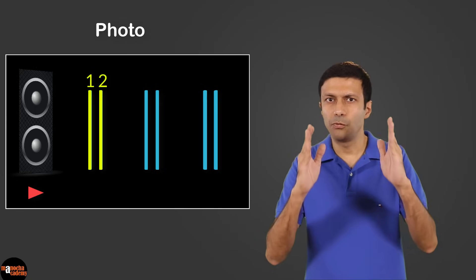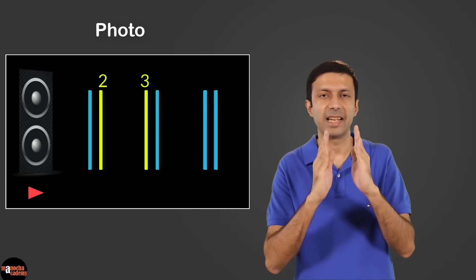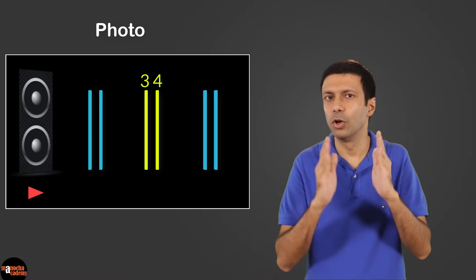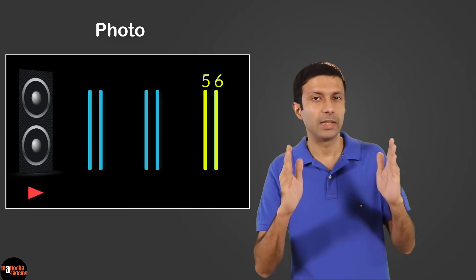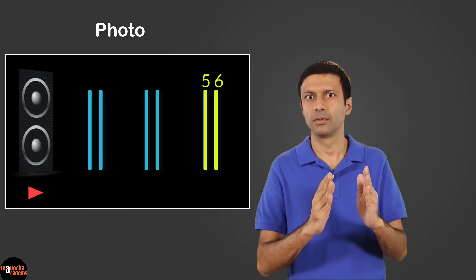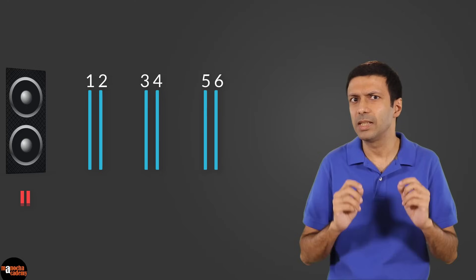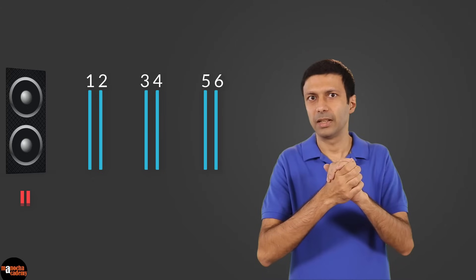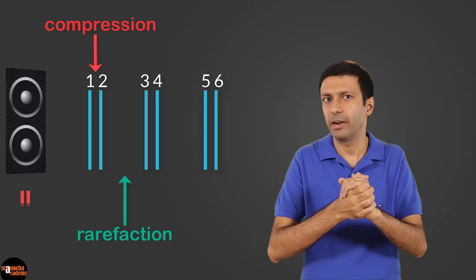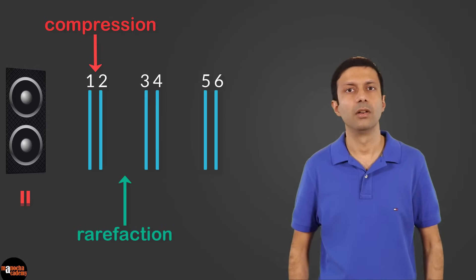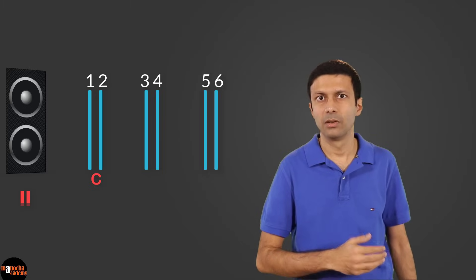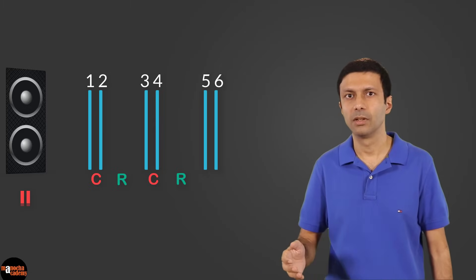Here's a photo of the layers of air. If you look closely at the pattern, you can see that the first two layers are close to each other, the second and third are far from each other, the third and fourth are close again, the fourth and fifth are far from each other, and so on. Can you notice the alternating pattern? When the two layers of air are close to each other, it's called a compression. When they are far from each other, it's called a rarefaction.